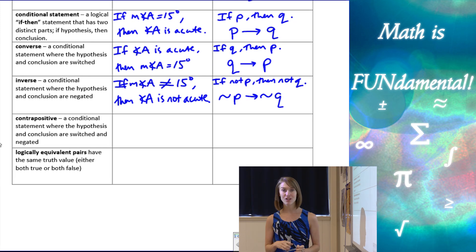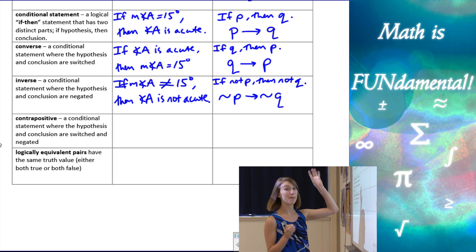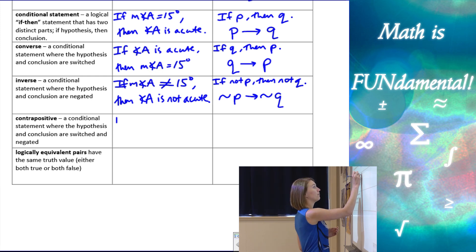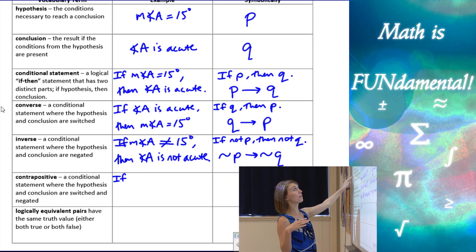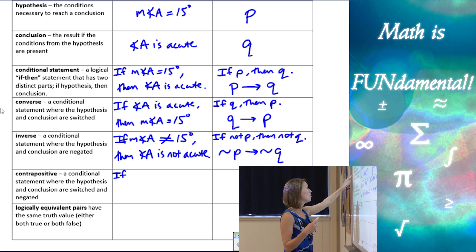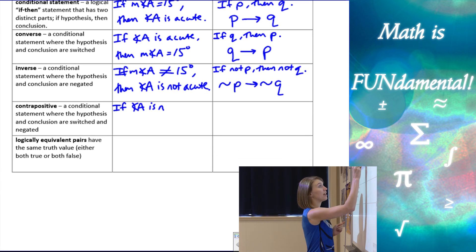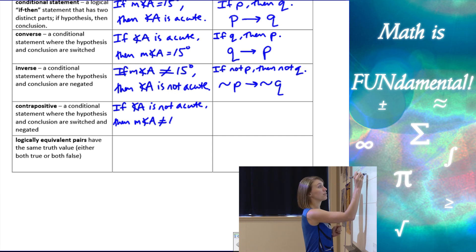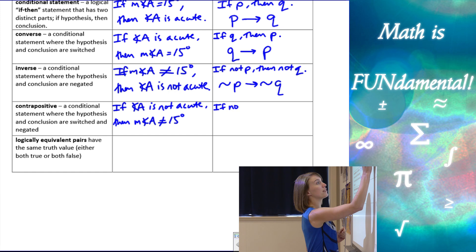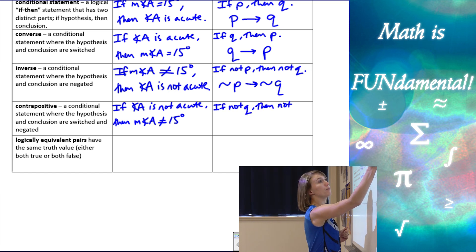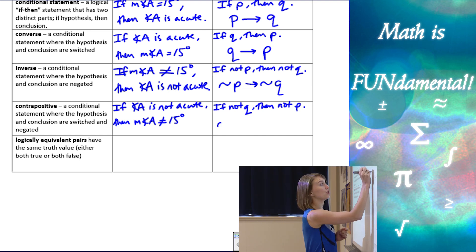The contrapositive is when we switch the hypothesis and conclusion and also make them negative — combining both changes. We want the conclusion to come first but negated. So: if angle A is not acute, then the measure of angle A is not equal to 15. Symbolically, that's 'not Q implies not P,' written as squiggle Q, arrow, squiggle P.